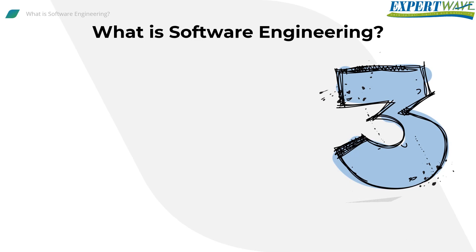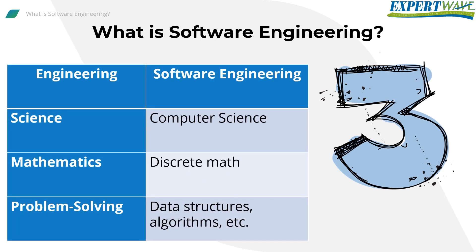Any engineering discipline is based on three fundamental pillars: one, scientific support provided by science; two, mathematical foundation provided by math; and three, a problem-solving approach. In software engineering, the scientific background comes from computer science, the math foundations come from discrete math, and the problem-solving approach comes from data structures, algorithms, etc.